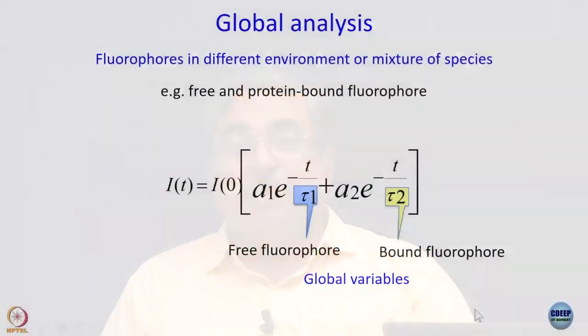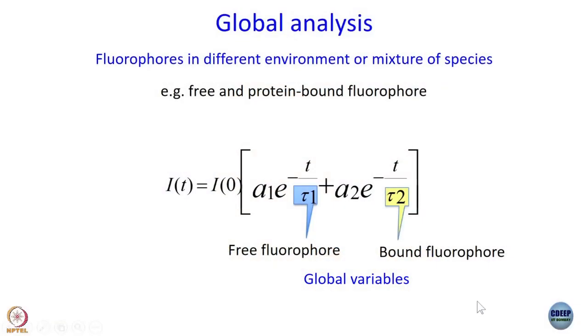So for all 10, 12, or 20 sets, you should get the same values of tau 1 and the same values of tau 2. These tau 1 and tau 2 are called global parameters or global variables, meaning they have the same value — tau 1 is not equal to tau 2, but all tau 1 values are the same across the set, and all tau 2 values are the same across the set.